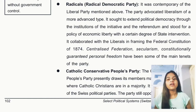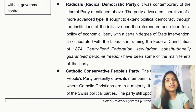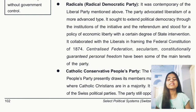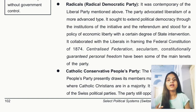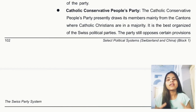The main objectives of the Radical Democratic Party were that personal freedom should be guaranteed, secularism should be upheld — meaning the right to practice any religion — and there should be a centralized federation, meaning more power with the center.